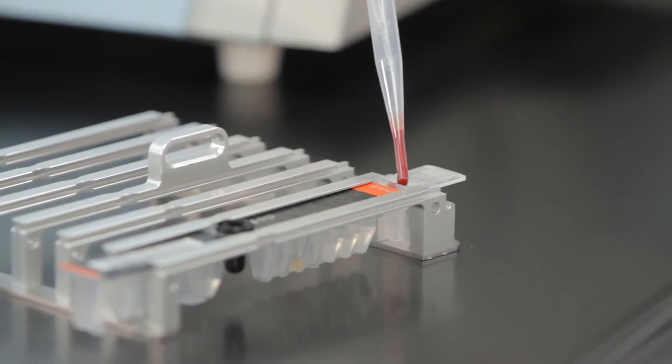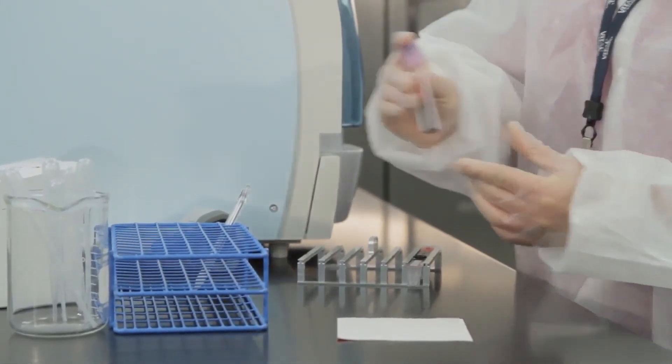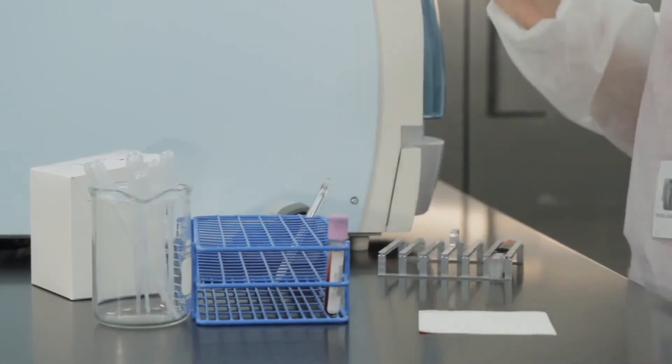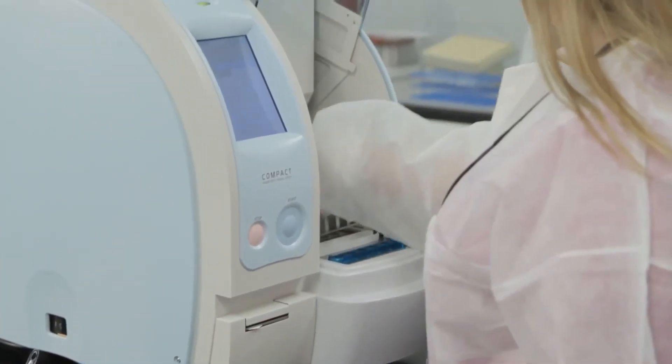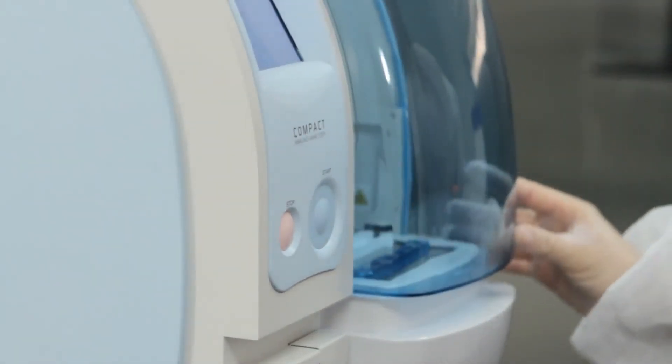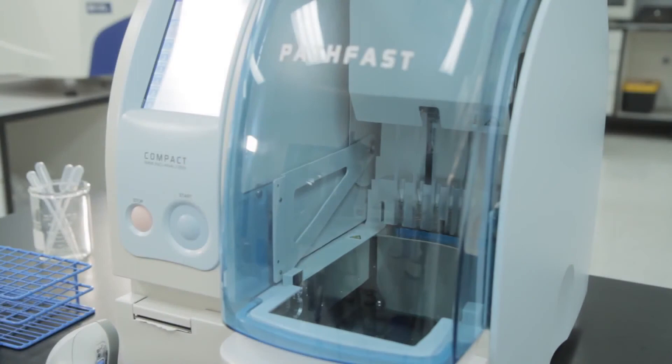First, add the sample to the reagent cartridge. The PathFast requires only 100 microliters of sample for each test. Second, insert the cartridge rack into the analyzer. Finally, shut the door and press start. The PathFast takes care of everything else automatically.